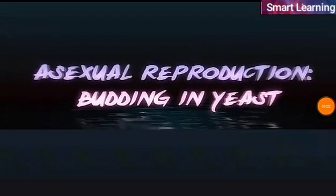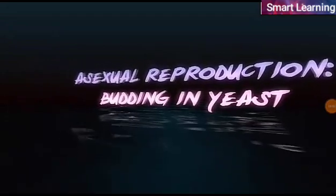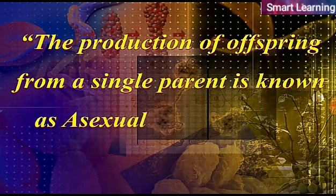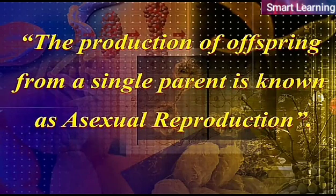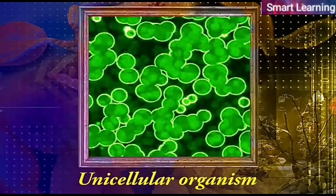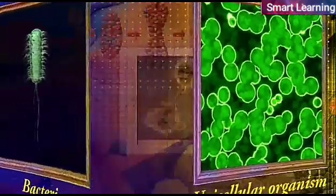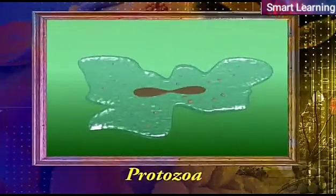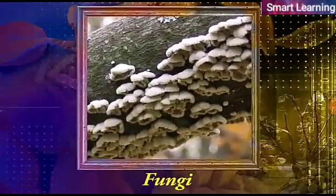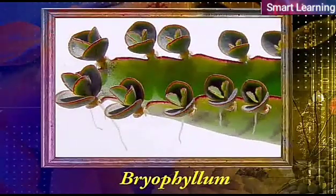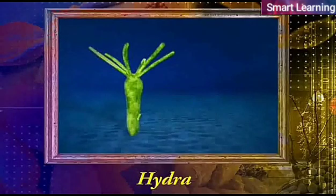Asexual reproduction is the production of offspring from a single parent. It occurs mostly in unicellular organisms such as bacteria and protozoa, as well as in plants like fungi and bryophyllum, and certain multicellular animals like hydra.